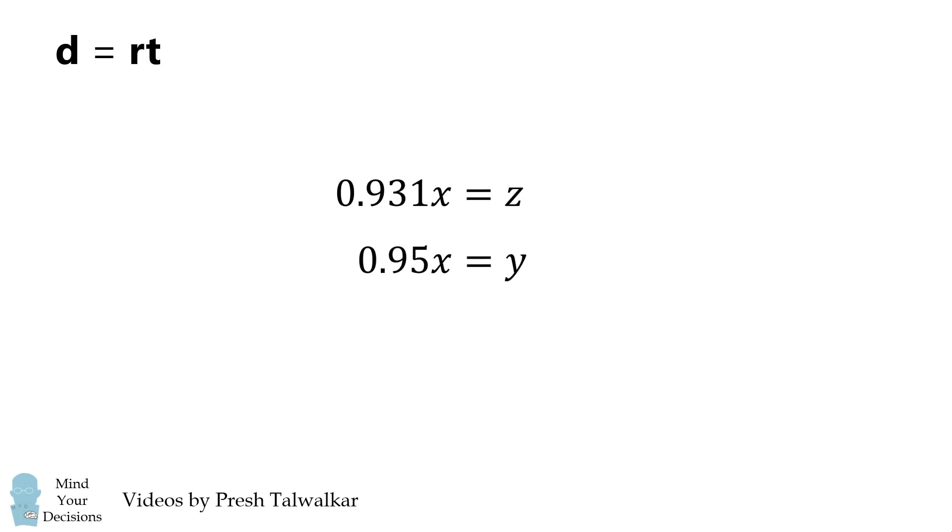We have two equations, and we'll divide the second from the first. The X terms cancel out, and then this fraction simplifies to 0.98. It'll be convenient to write it as 98 over 100, which equals 980 over 1000.